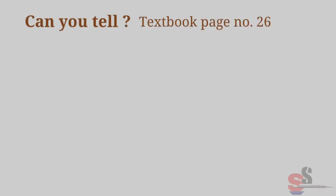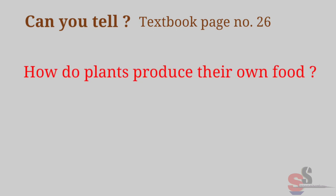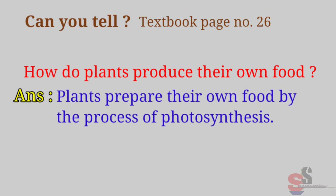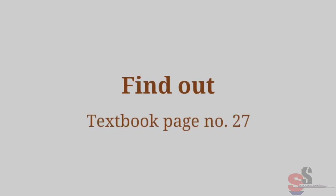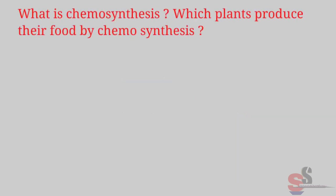Can you tell? Textbook page 26: How do plants produce their own food? Answer: Plants prepare their own food by the process of photosynthesis.